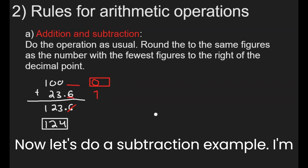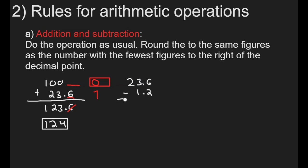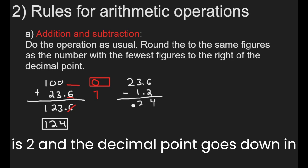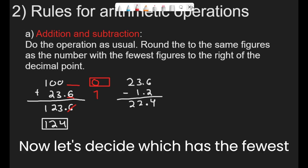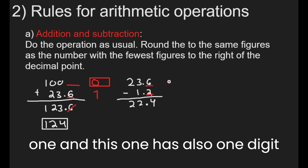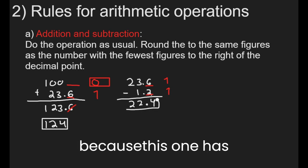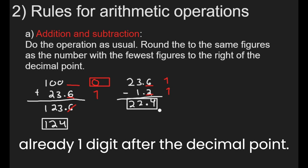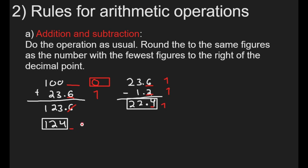Now let's do a subtraction example: 23.6 minus 1.2. Performing the subtraction gives 22.4. Both numbers have one digit after the decimal point, so the answer also has one digit after the decimal point — my final answer is 22.4.